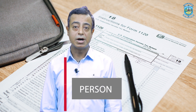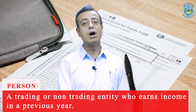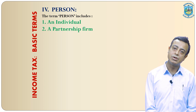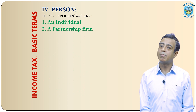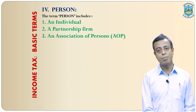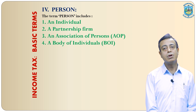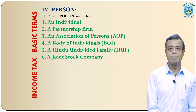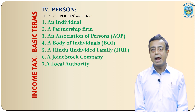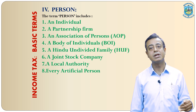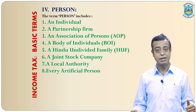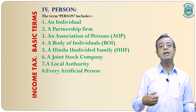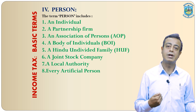The next term is person. Person means a trading or non-trading entity who earns income in a previous year. In the term 'person' we include: an individual; a partnership firm who pays tax through the particular partner; association of persons, in short AOP; body of individuals; Hindu undivided family who pays tax through the karta or chief of the family; joint stock company; local authority; and finally, artificial person. An artificial person is any particular organization registered under any particular act. So in short, a person means an individual or any business organization including artificial authority or artificial person.